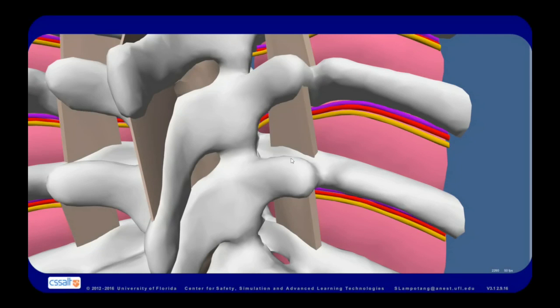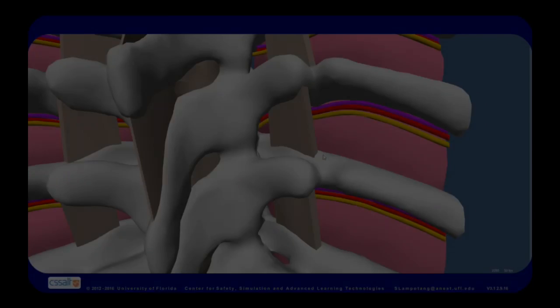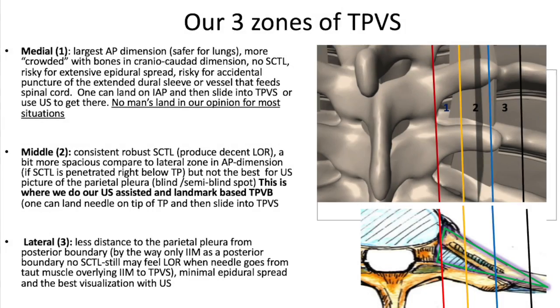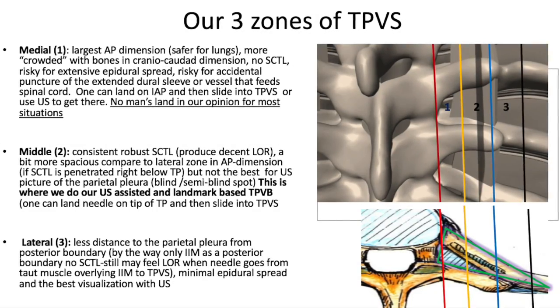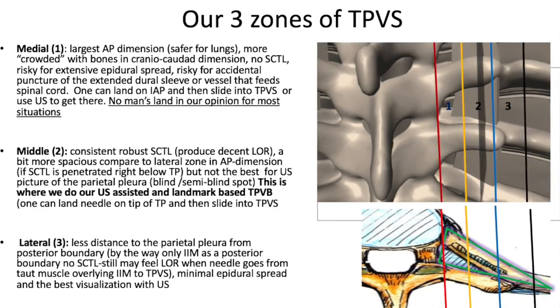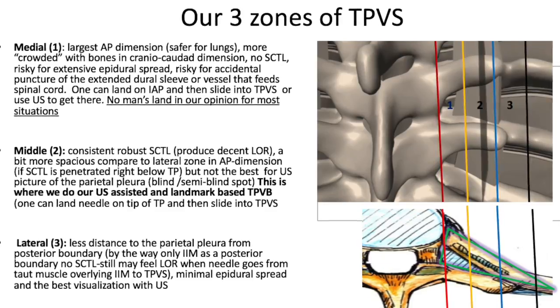We can also talk about the zones of the paravertebral space. This zone right here would be medial, this zone right here would be middle, and this zone right here would be lateral. The three zones of the thoracic paravertebral space are medial, middle, and lateral.